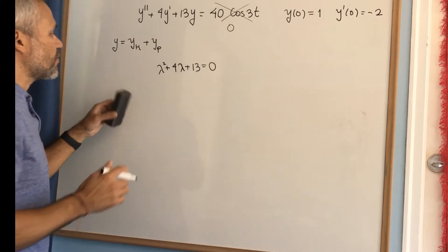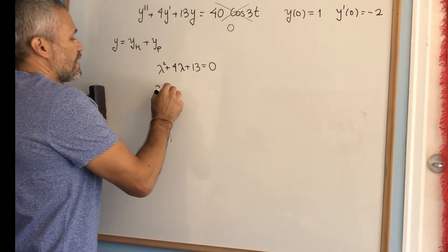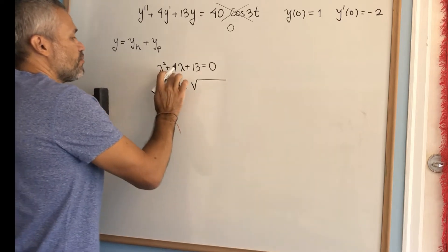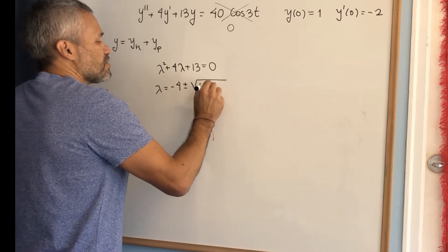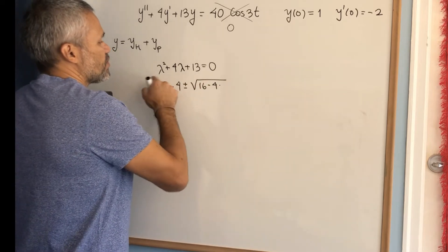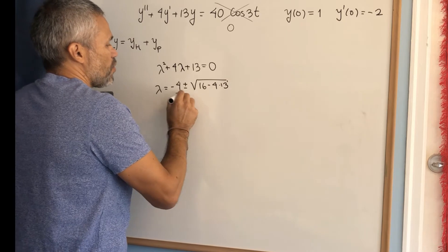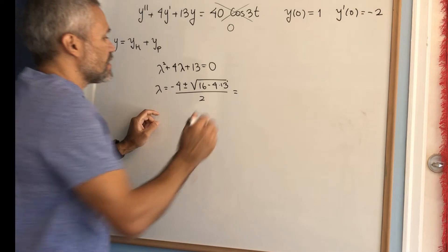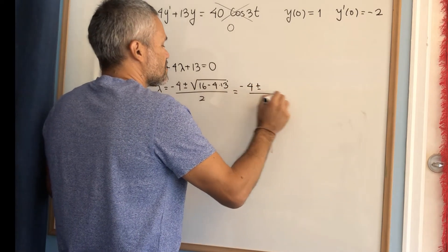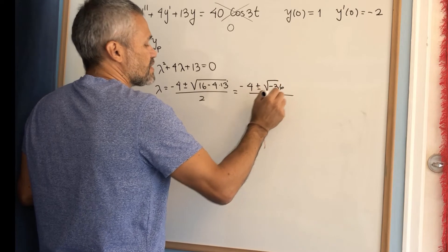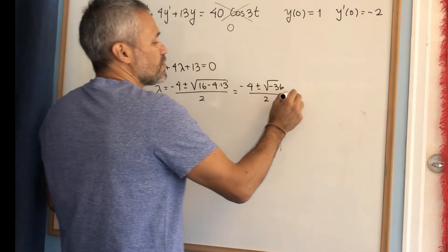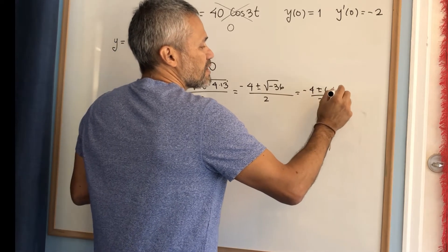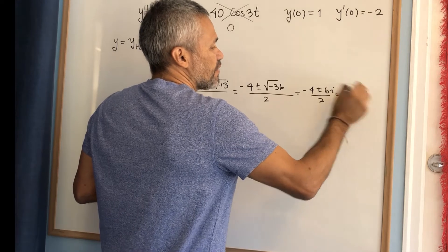We solve the quadratic equation: lambda equals negative b, which is negative 4, plus or minus the square root of b squared — which is 16 — minus 4 times a, which is 1, times 13, over 2. This gives negative 4 plus or minus the square root of negative 36, over 2, which is negative 4 plus or minus 6i, over 2, giving us negative 2 plus or minus 3i.